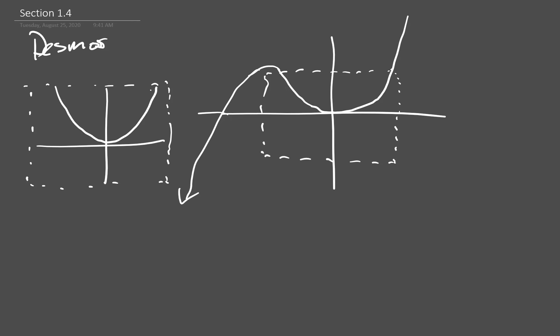So picking the right window means you want to be able to see all of the turning points, all of the roots of the polynomial that you may be graphing. If it's a rational function, maybe you want to see the asymptotes too. But you want to pick the window that shows you all of the important parts of the graph.